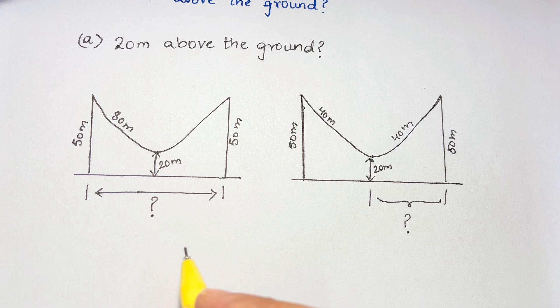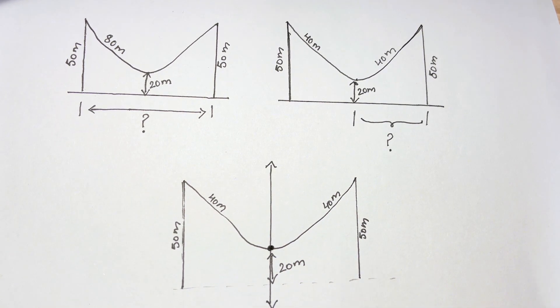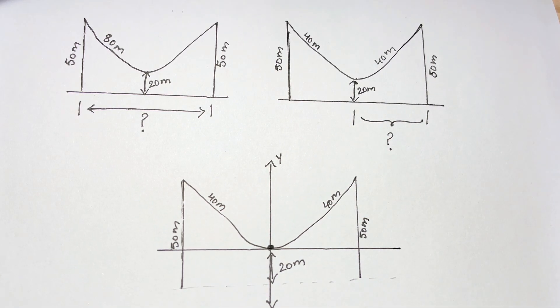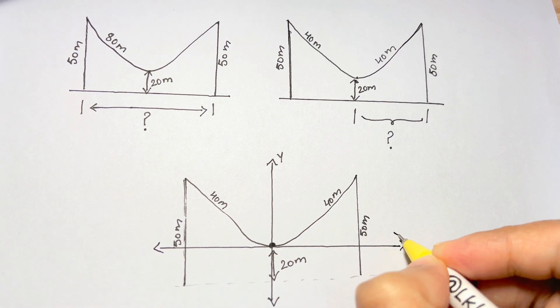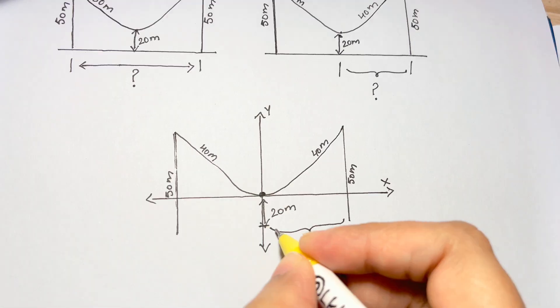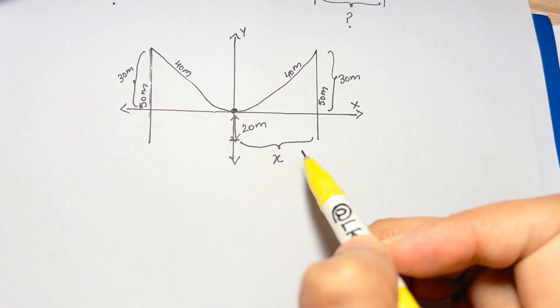We'll also use a convenient coordinate system that's centered at the center of this hanging cable. In other words, the y-axis goes at the center of the cable and the x-axis also goes so that it's just touching and tangent to the center of the cable. So we want to calculate this distance x.